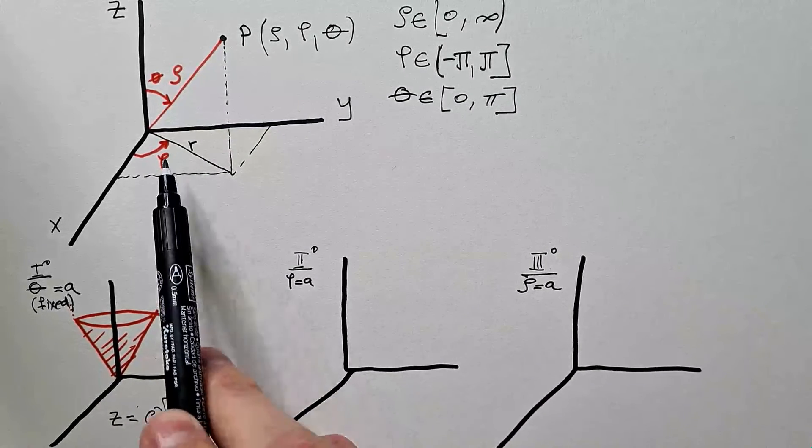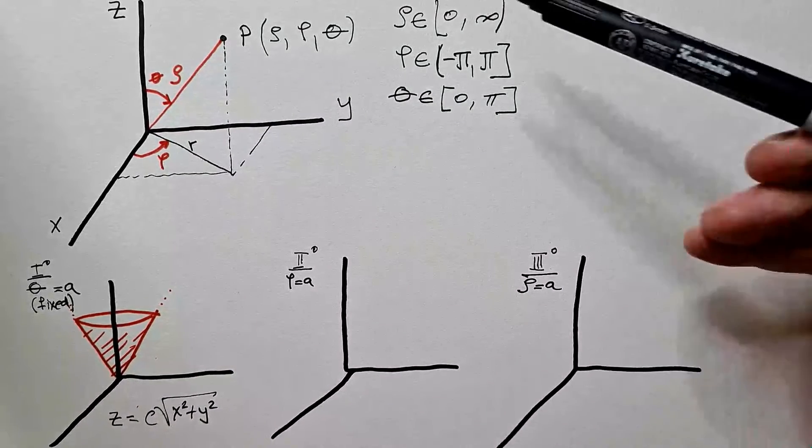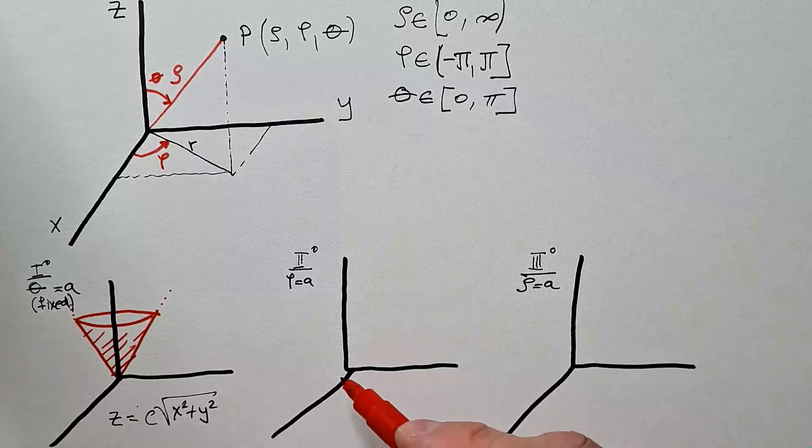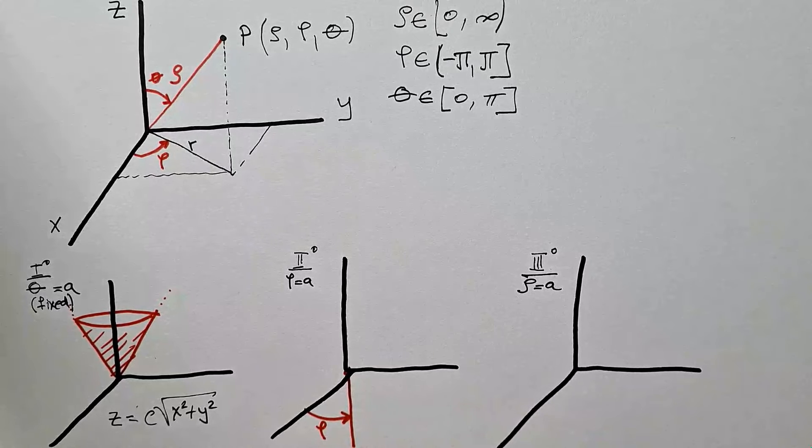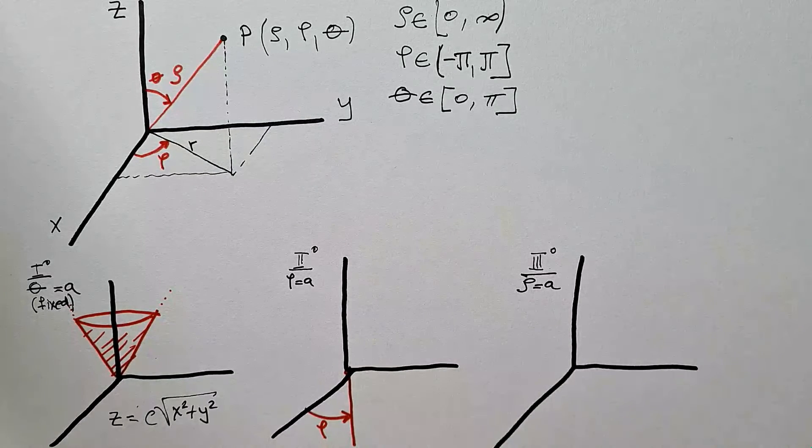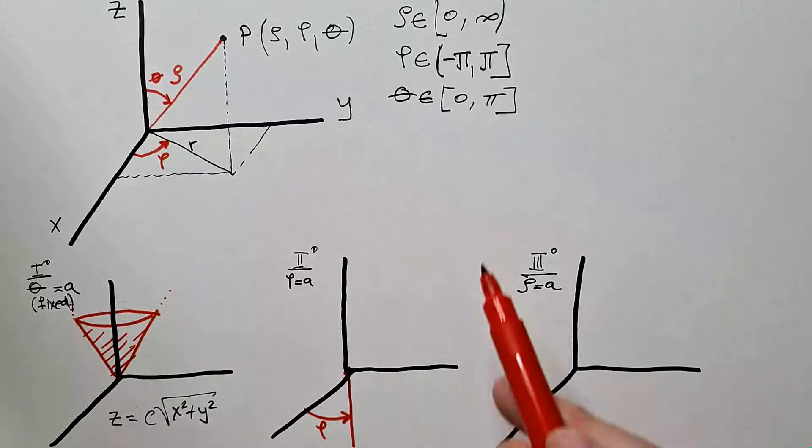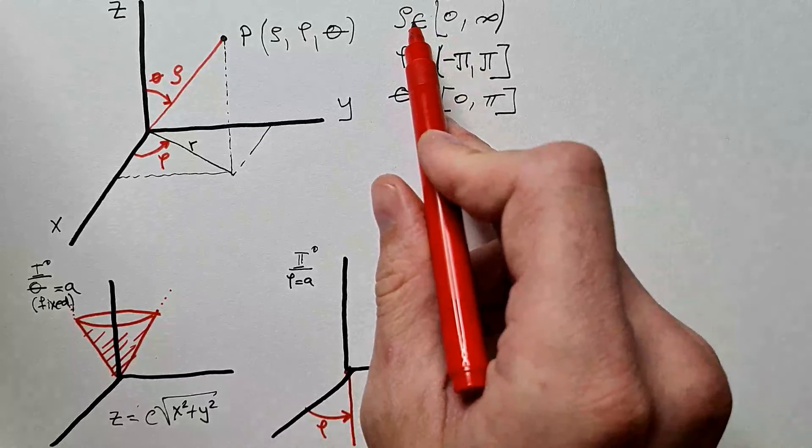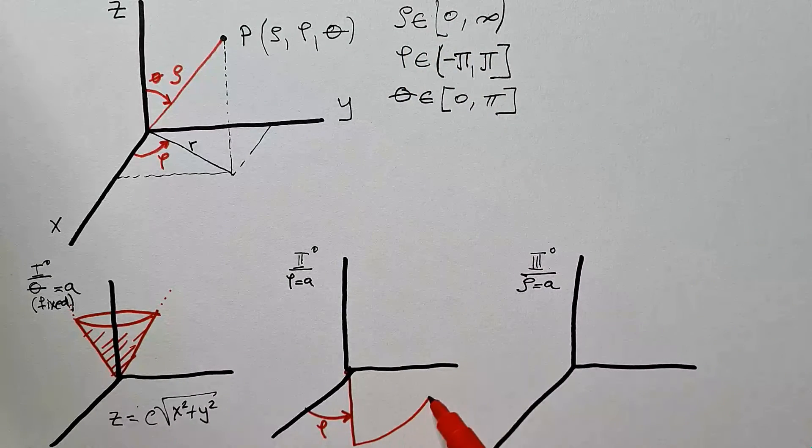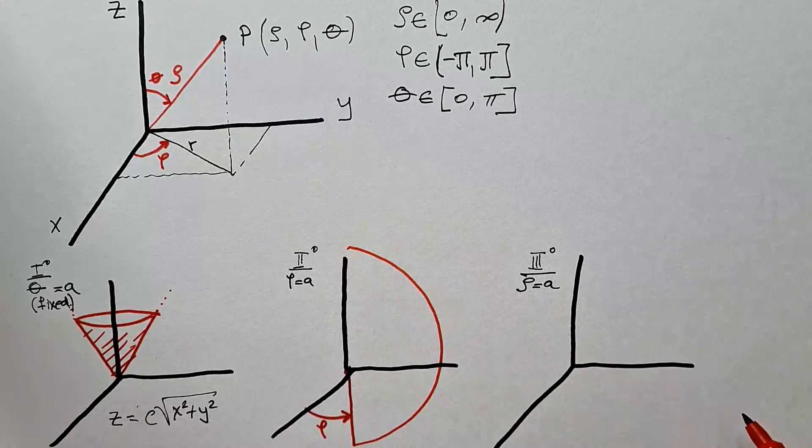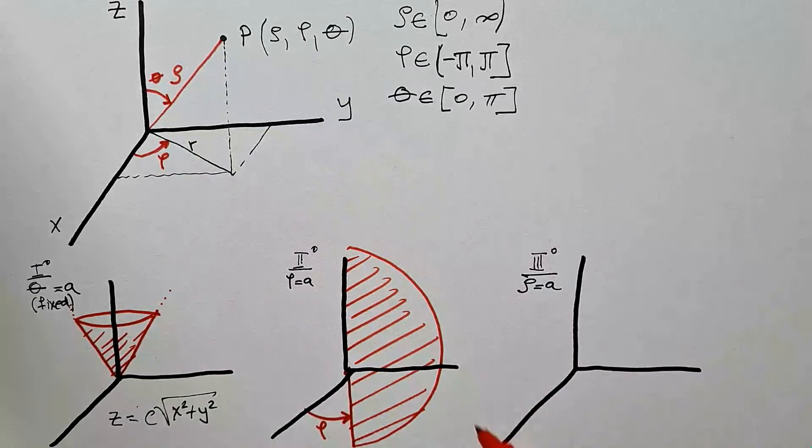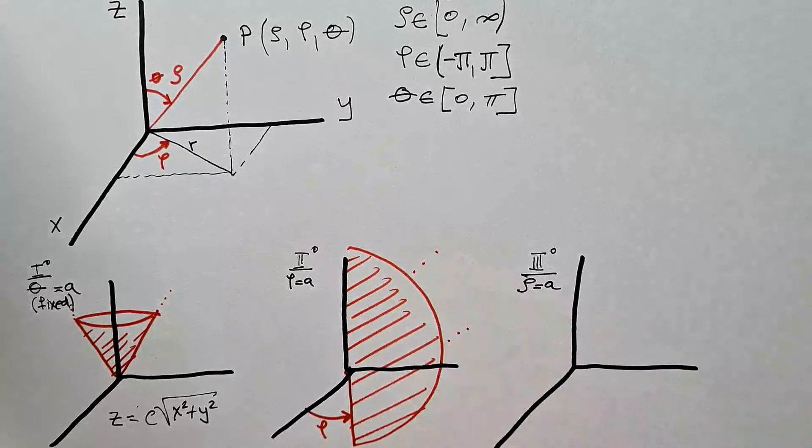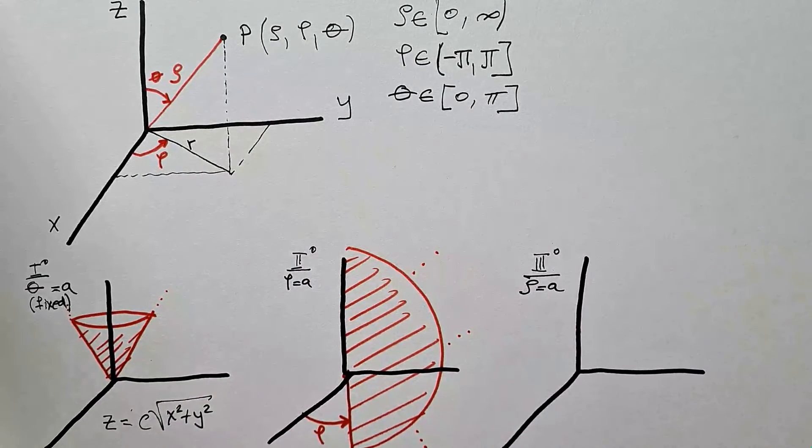Second case, we fix angle phi to some value A, and we let rho and theta vary freely. Let's say I fix angle phi to this value. And now, I vary all possible thetas between 0 and pi, and rho from 0 to infinity. What I will get is a shape like this. And this is surface, it's not a frame, but full shape. And this will actually go to infinity, but again, I have to stop somewhere.